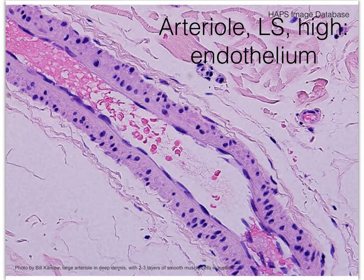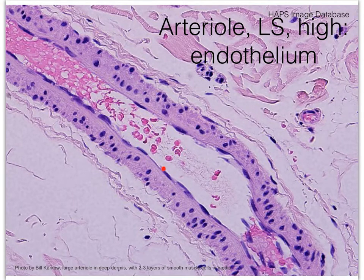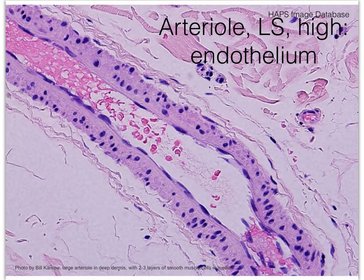Red blood cells, when they're mature, lack organelles and a nucleus, so they just look like nice pink reddish little blobs. We can recognize this as simple squamous epithelium because when we focus on the nuclei, notice how flat they are. That's what you'll often have to do to identify epithelial tissues — look at the shape of the nuclei. So the tissue that lines all blood vessels is simple squamous epithelial tissue.